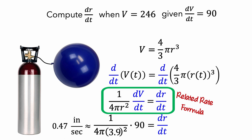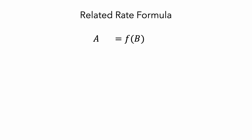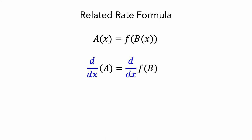Let's define the idea of a related rate formula in general. Suppose the variable a is a function of the variable b, and we think of both a and b as themselves functions of x. To get the related rate formula that defines the relationship between the rate of change of a with respect to x and the rate of change of b with respect to x, we differentiate both sides of the equation with respect to x. On the left side we get da/dx. On the right side we have a composite function, because f is a function of b and b is a function of x, so we need to use the chain rule: differentiate f with respect to b, then multiply by the derivative of b with respect to x. This resulting equation is called a related rate formula.